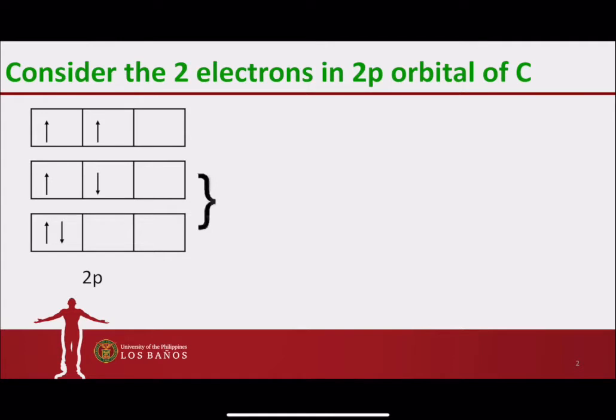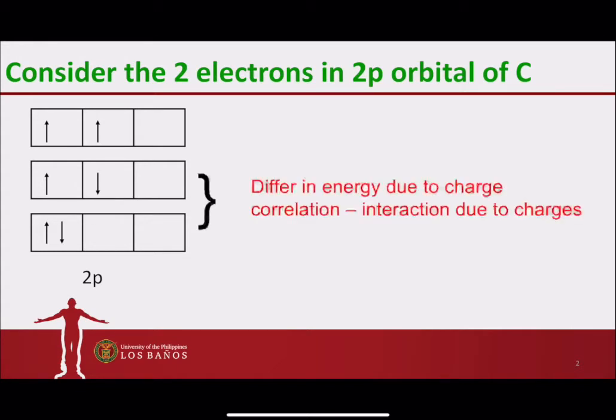If we compare the bottom arrangement with that of the middle arrangement, the difference is that the electrons are in one orbital only for the bottom arrangement, but in the middle arrangement, the electrons are in two different 2p orbitals. That difference will result in a difference in energy, as brought upon by the interaction due to charges. Since electrons are negatively charged particles, having them in only one orbital would mean there is an increase in repulsion because of having the same charges.